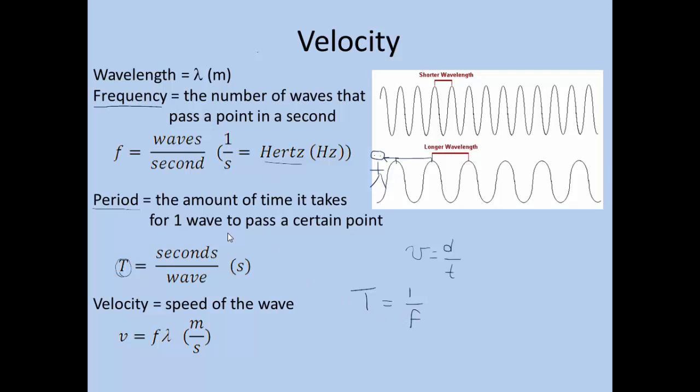So if we know one, we can figure out the other. And then we can find the velocity from this. Our regular kinematics velocity of distance over time, we can then convert into a velocity equation that we can use for all waves. This works for all types of waves.